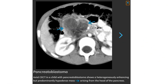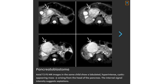This is the contrast-enhanced CT in a child with pancreatoblastoma, showing a heterogeneously enhancing but predominantly hypodense mass arising from the head of the pancreas. This is another CT showing a lobulated hyperintense cystic-appearing mass arising from the head of the pancreas. The internal signal intensity suggests septation.